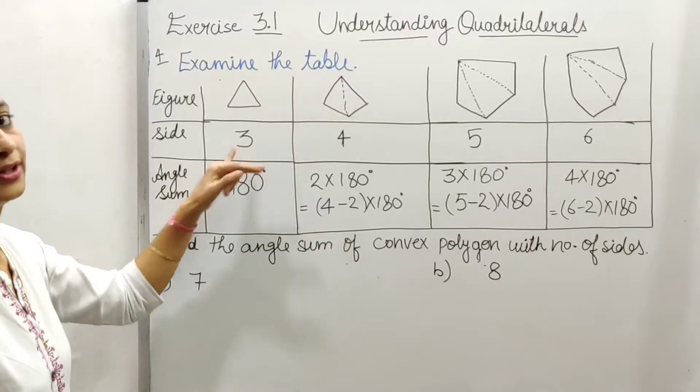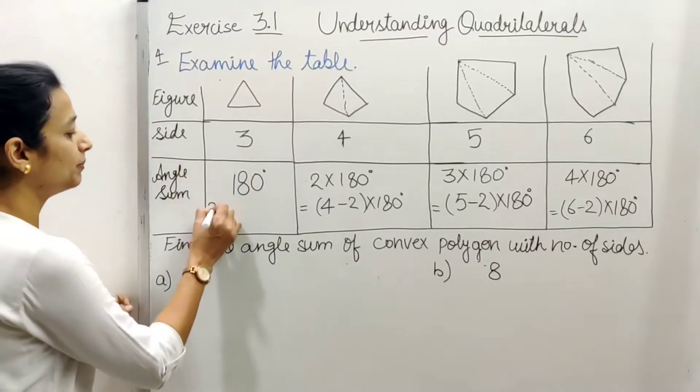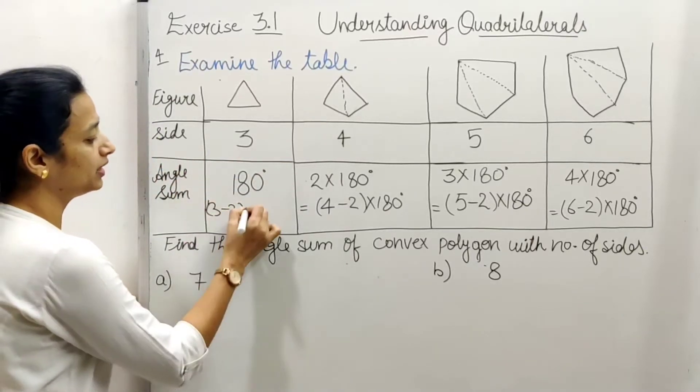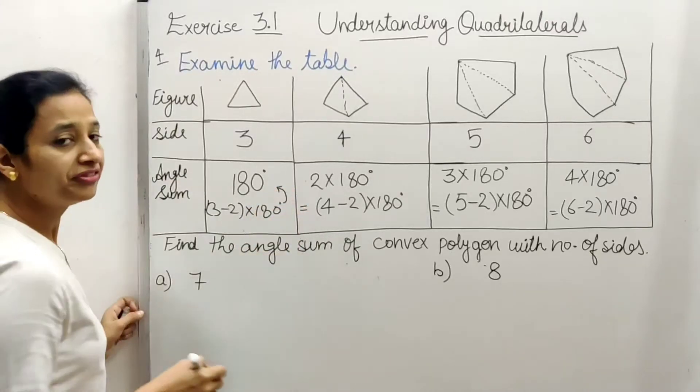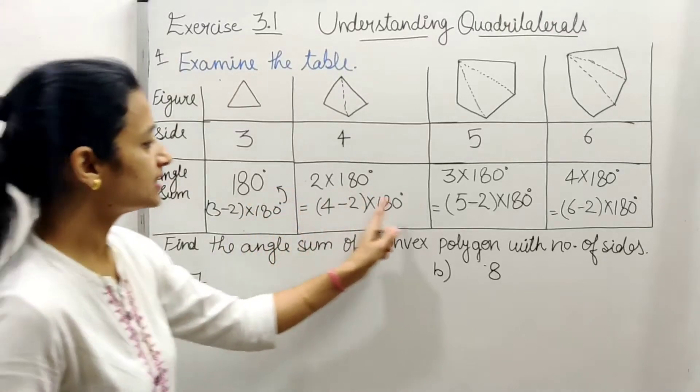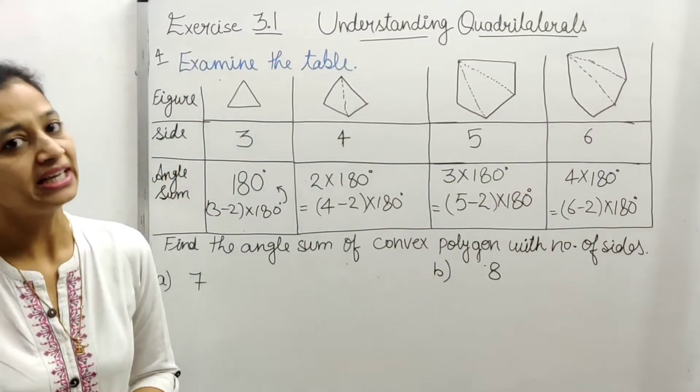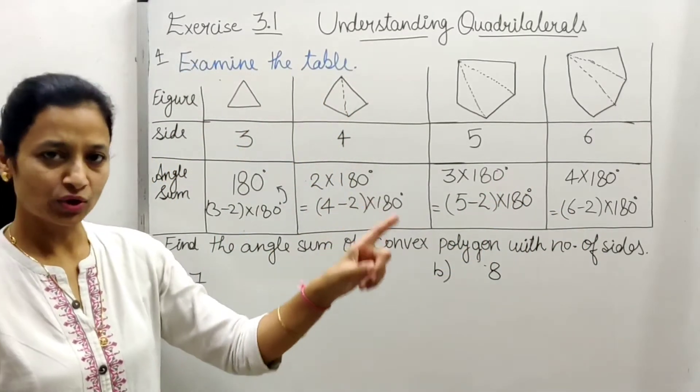side minus 2 into 180. And here we have 3 sides, so what will it be? 3 minus 2 means 1 into 180 degree. So finally what will it be? 180, right. So this is all the angles sum we have defined in this table.